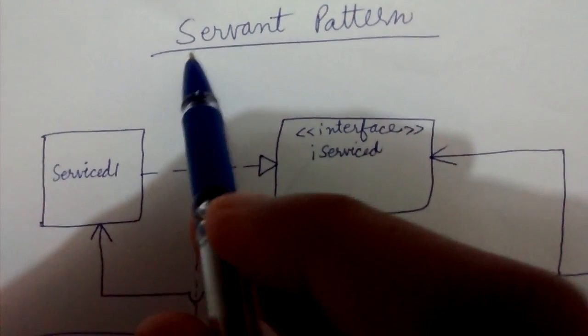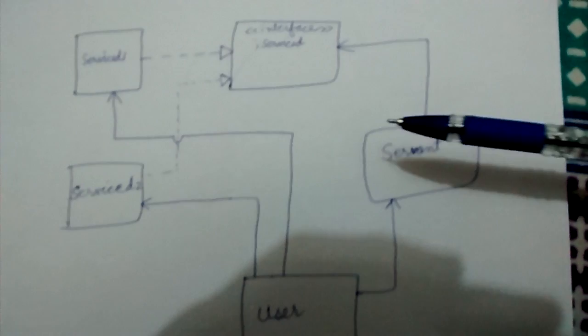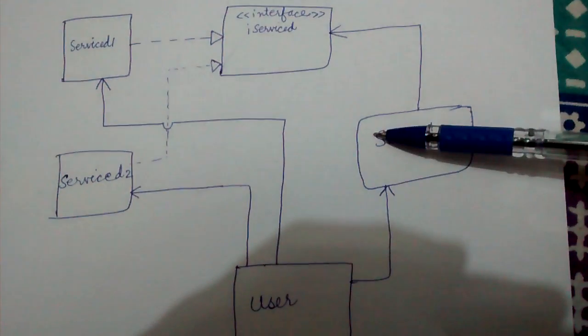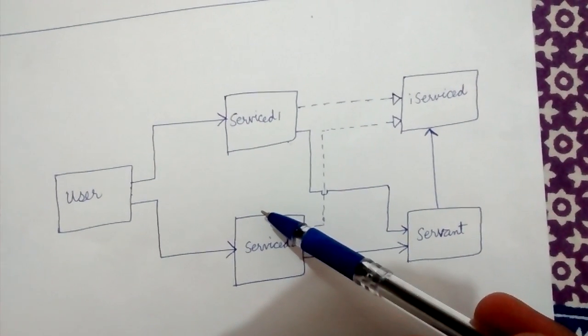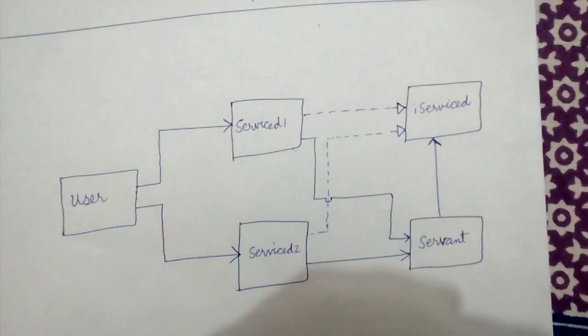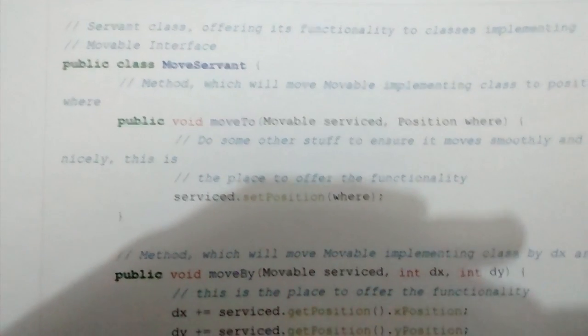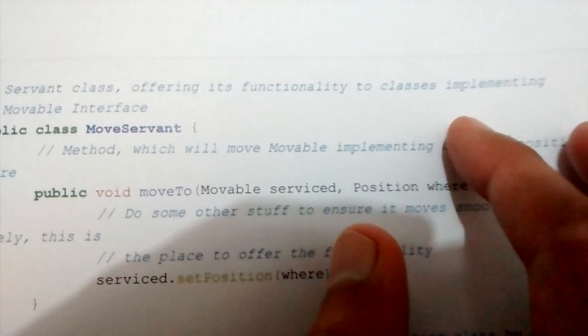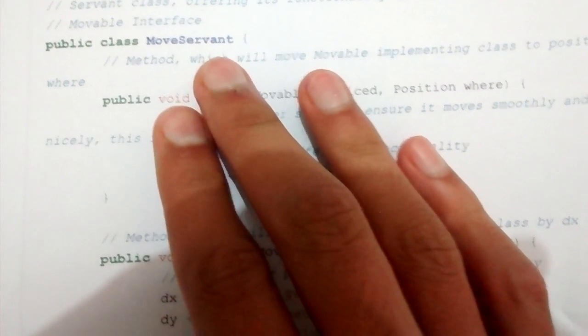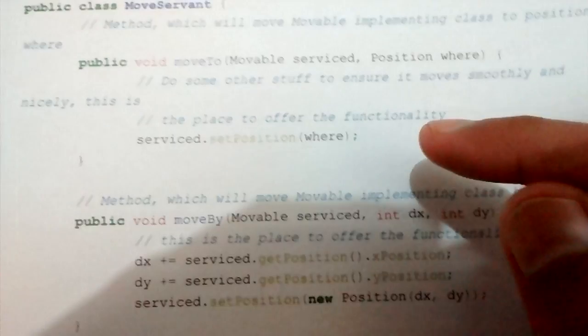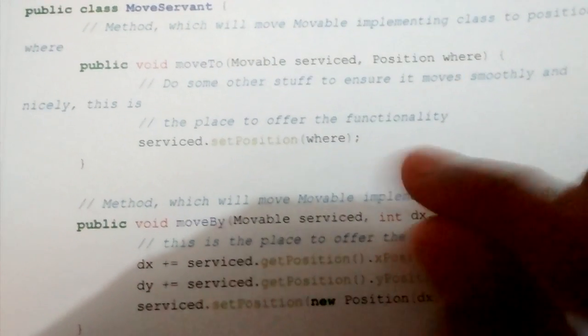Today we will be looking at a very important design pattern: the Servant pattern. These are the two most common implementations of the servant design pattern — the first one and the second one. We will look at these class diagrams, but first let us look at an example to make things clearer. This is the servant class offering its functionality to classes implementing the movable interface. This servant class is at the heart of this pattern — it basically offers its service, or functionality, to the serviced classes.